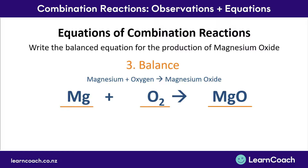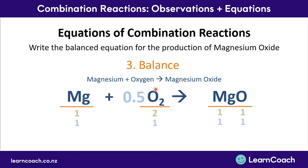On the reactant side we have one magnesium atom and two oxygen atoms. On the product side we have one magnesium atom but only one oxygen atom — so we're missing an oxygen atom and the equation is not balanced. An easy way to balance it is to use half an oxygen molecule on the reactant side, giving one oxygen atom. This balances the equation: one magnesium and one oxygen on each side.